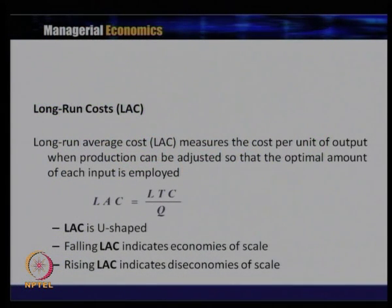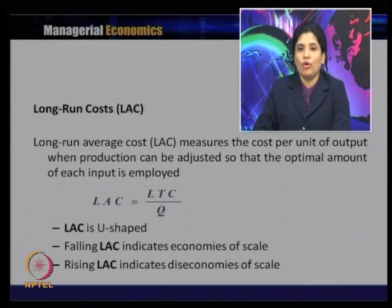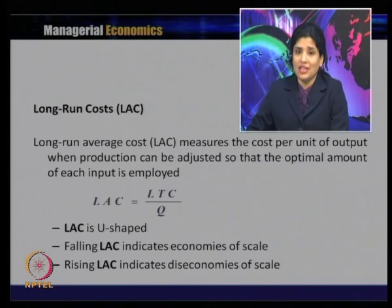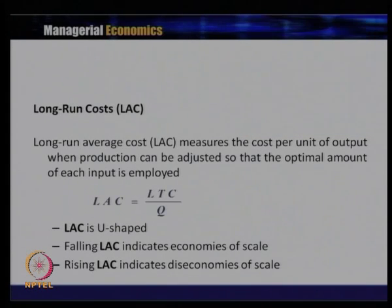The long run average cost curve measures the cost per unit of output when production can be adjusted so that the optimal amount of each input is employed. Long run average cost equals long run total cost divided by Q. The long run average cost curve is U-shaped. A decreasing long run average cost curve indicates economies of scale, while an increasing portion indicates diseconomies of scale.